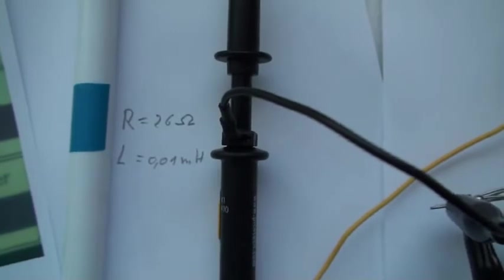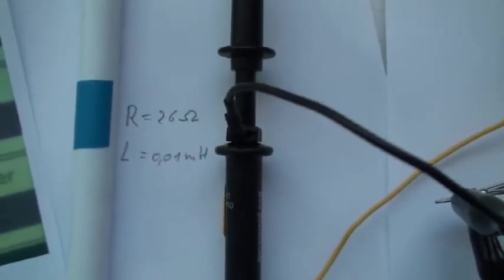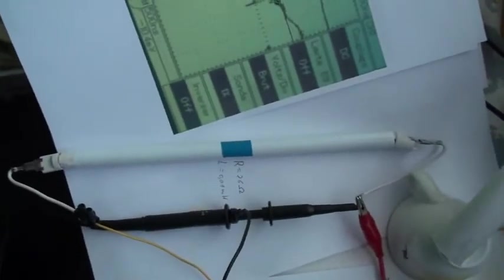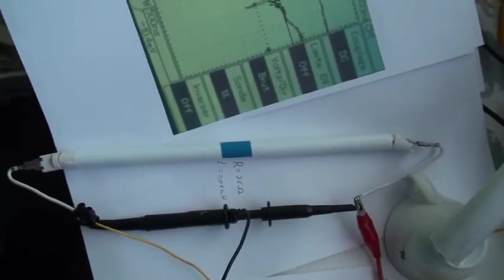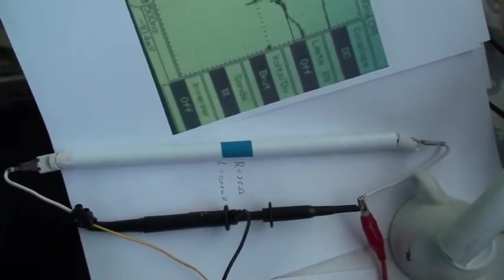Very interesting, because this system heats this 26 ohm, 0.01 millihenry, it is a microwave oven grill resistor.